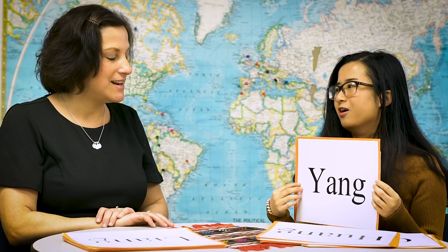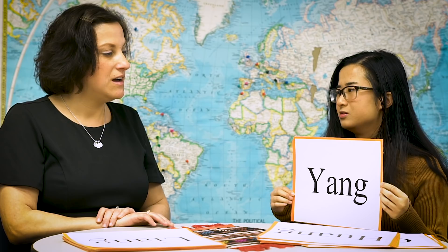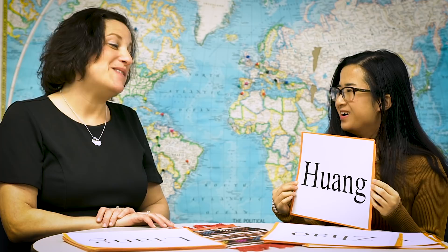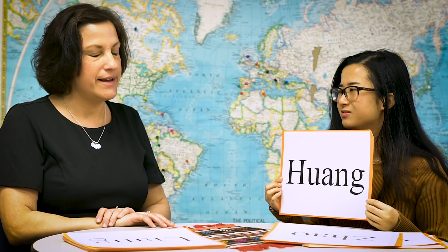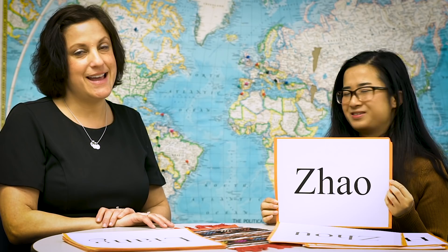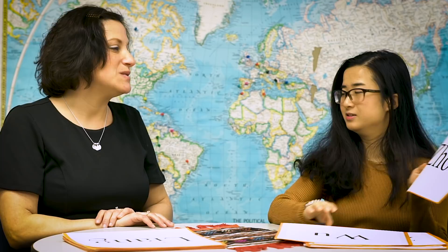HUANG. HUANG. HUANG. Remember the A-N-G? HUANG. I would say ZOW, but you told me it should be like a G — JOW. JOW. JOW. You're great. ZHOU. Close enough, yeah. So the OU sounds more like an O? Yes. ZHOU. ZHOU. WU. WU. WU. Yes, okay. This is an easy one.